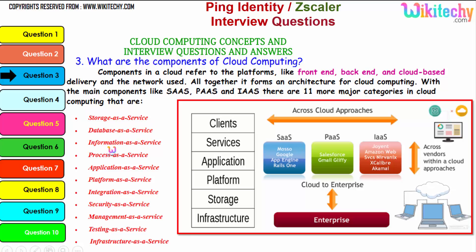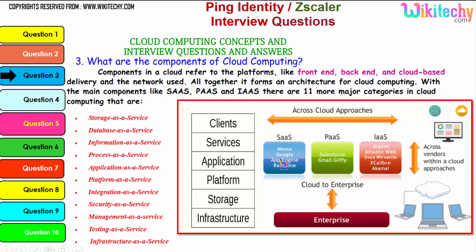There are 11 major categories in cloud: storage as a service, database as a service, information as a service, process as a service, application as a service, platform, integration, security, management, testing, and finally infrastructure. These are additional services associated with the three major services to form cloud computing. Examples include App Engine and Google Maso for Software as a Service; Gmail and Salesforce for platform; and Amazon Web Services, Akamai, and others for infrastructure.